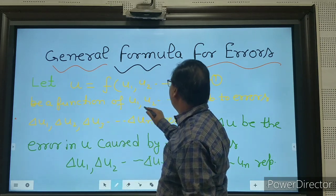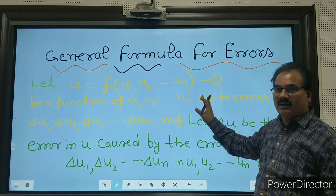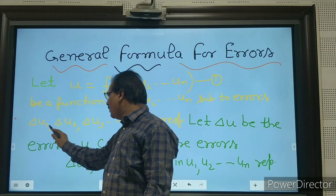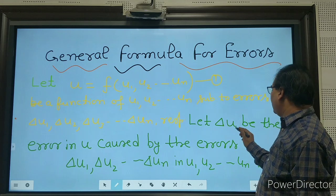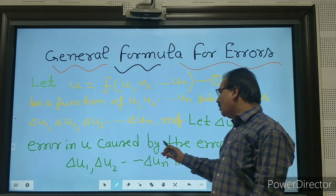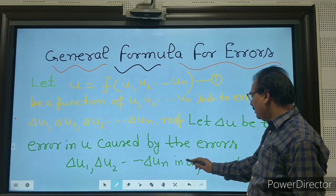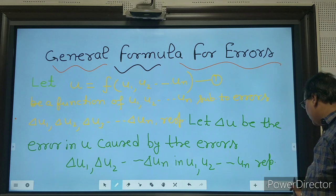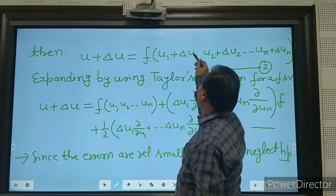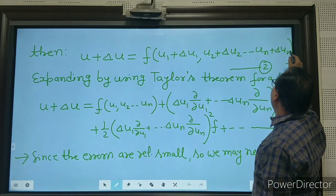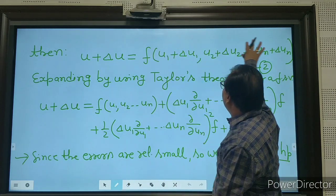u is a function of u1, u2, ..., un, subject to errors del_u1, del_u2, del_u3, up to del_un respectively. Let del_u be the error in u caused by those errors. Then u plus del_u can be written as f(u1 + del_u1, u2 + del_u2, ..., un + del_un) — this is equation number 2.